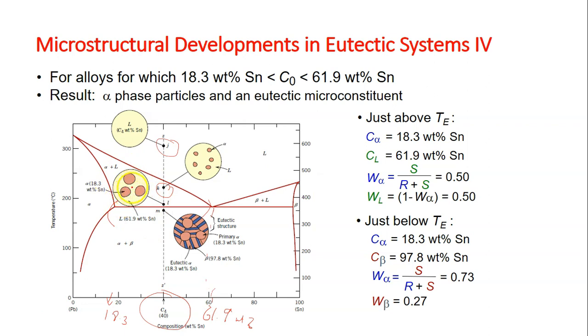The mass fraction of the solid is getting higher and higher. When we further cool the alloy, it will cross this eutectic isotherm. I'm stressing this again: this is the eutectic isotherm.